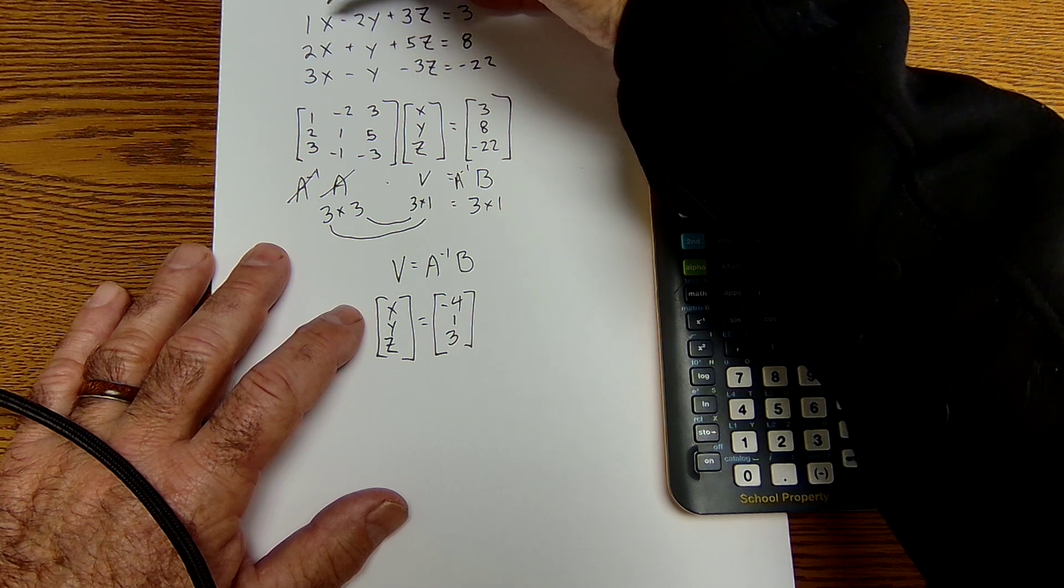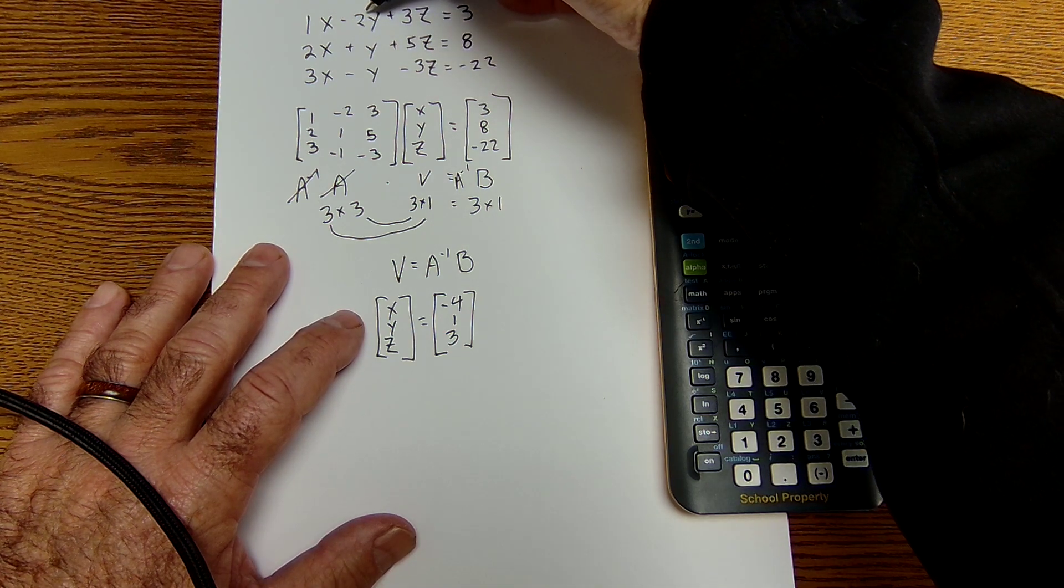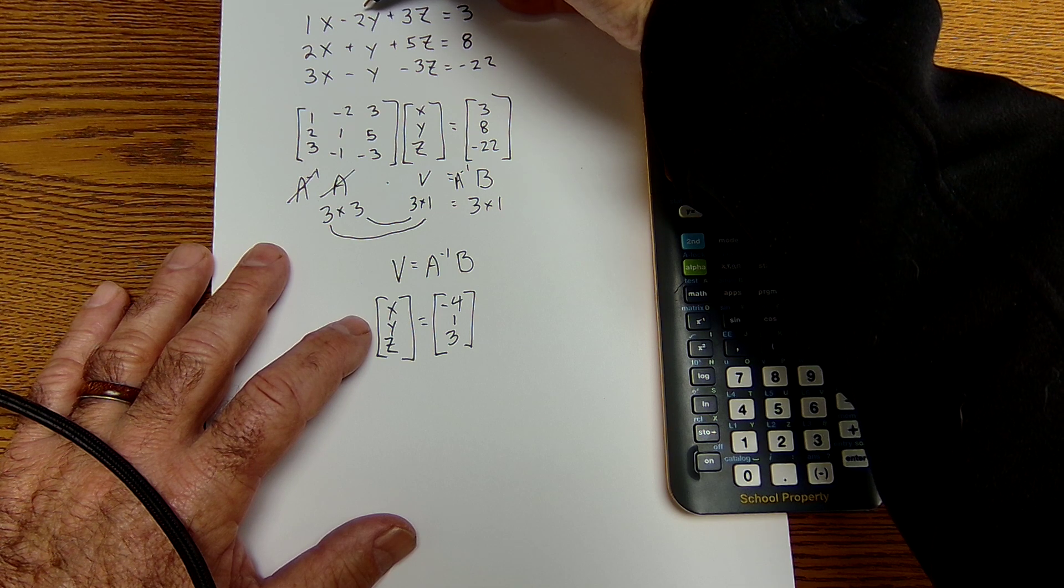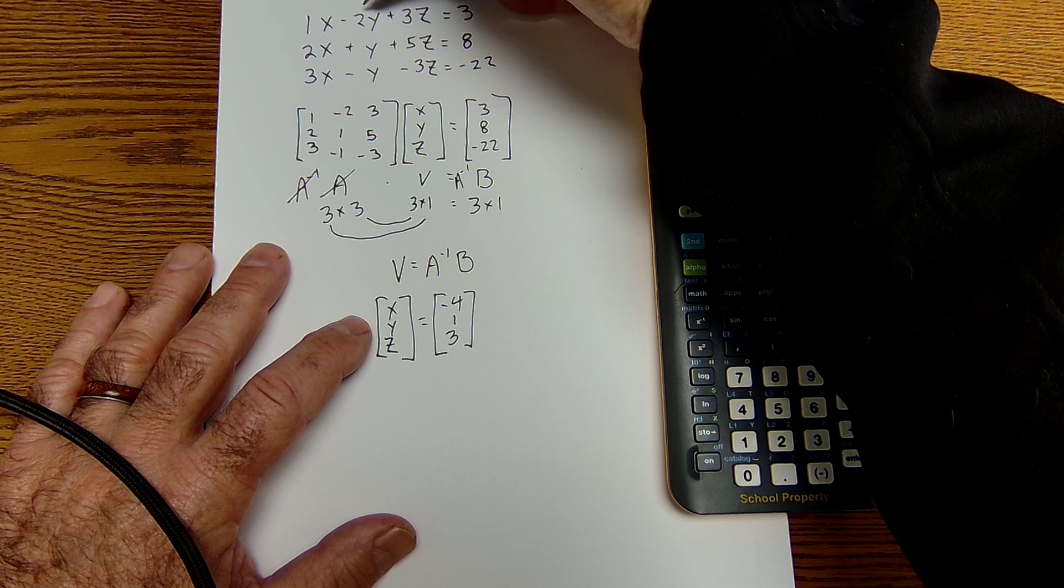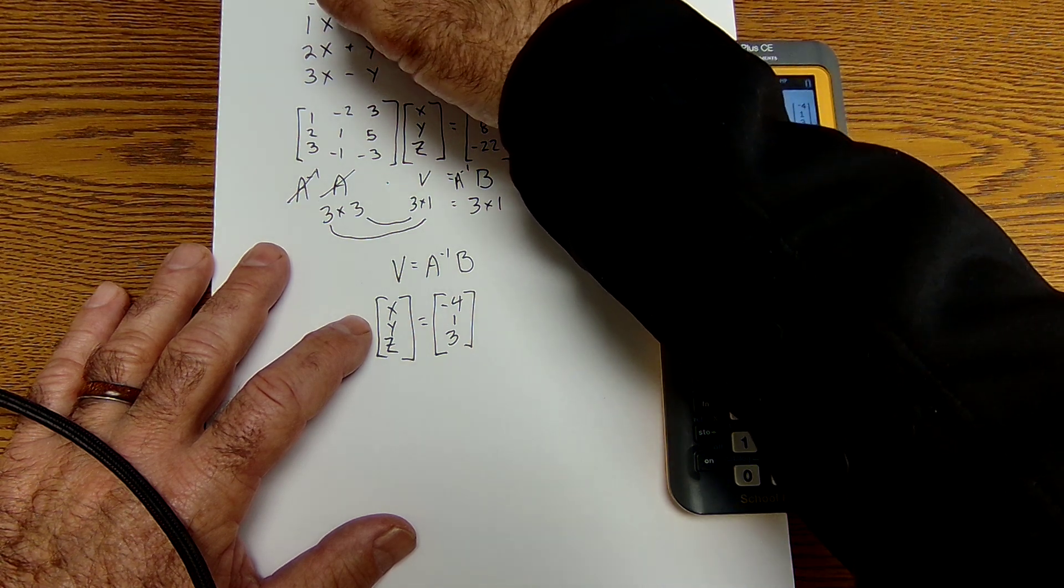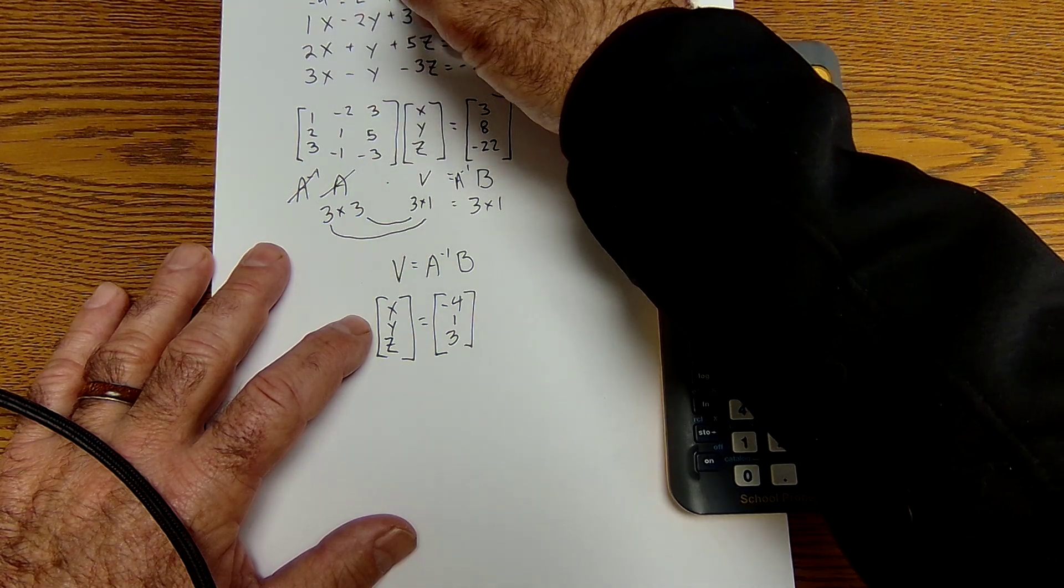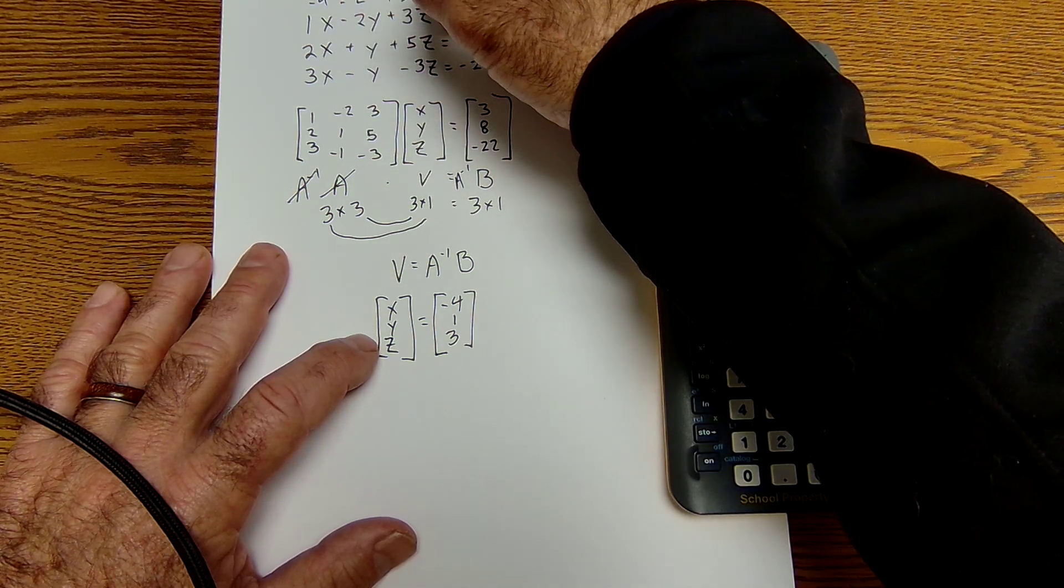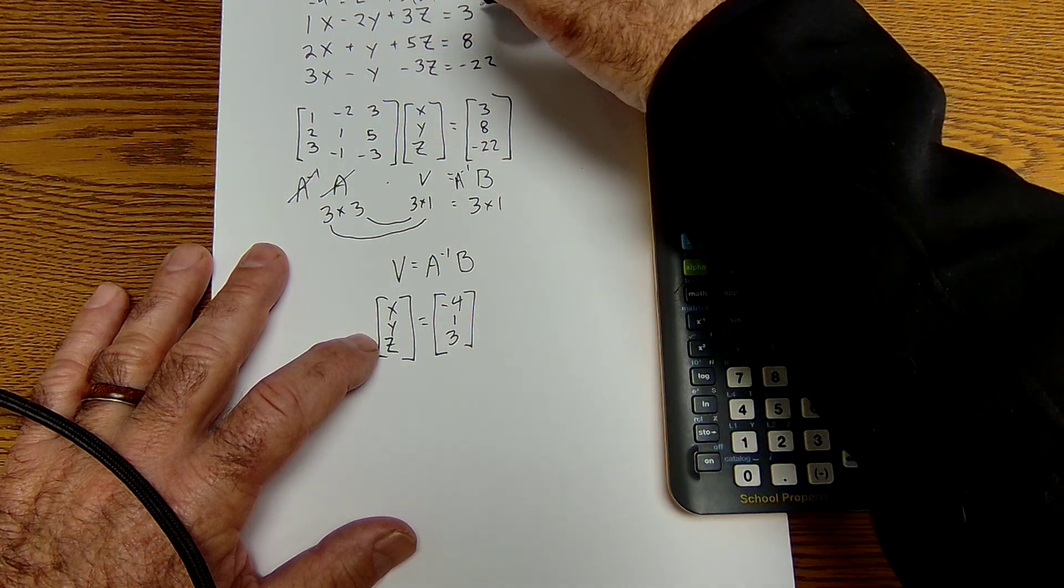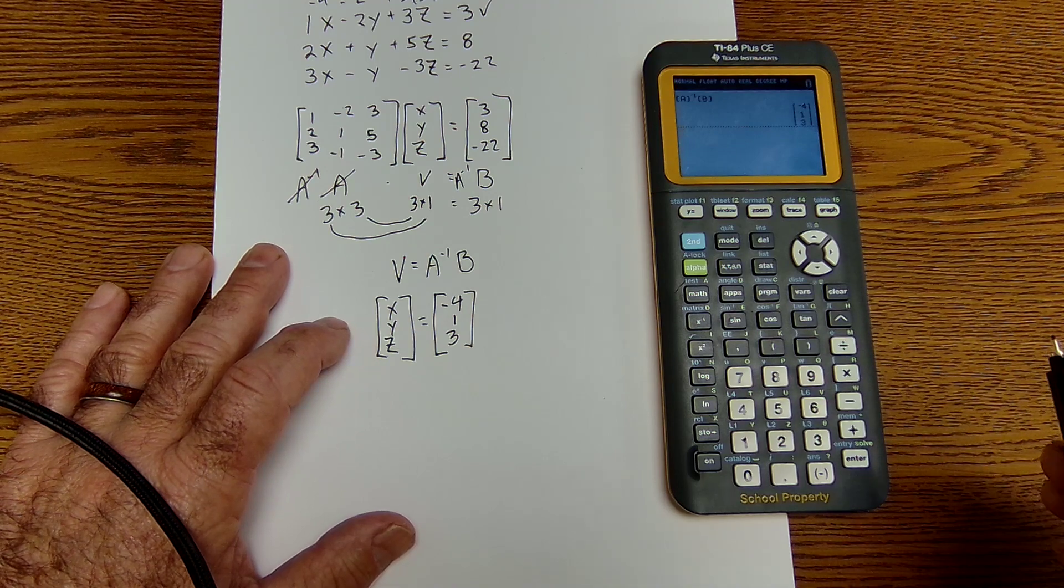Negative 4 minus 2, right? Negative 4 minus 2 is negative 6. Did I do something wrong there? I've got to write these in. This is going to be negative 4 minus 2 plus 3 times 3. So negative 6 plus 9 is equal to 3. That works. I check in the other equations. Hopefully it works as well.